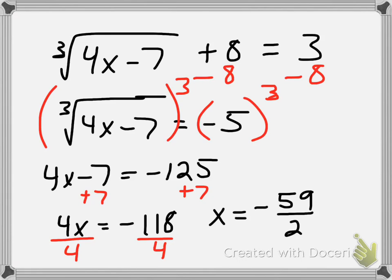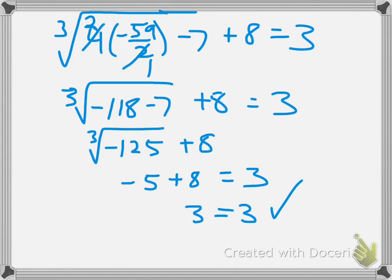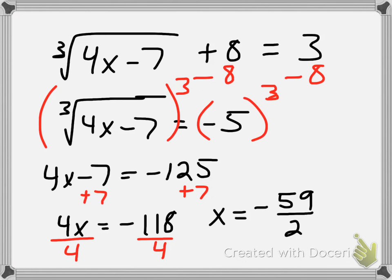So again, I isolate my radical, raise both sides to the appropriate power, continue to solve for x by whatever is necessary, solve, and then check my answer, and I'm done.